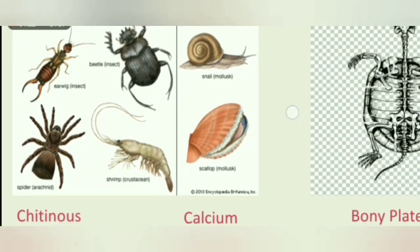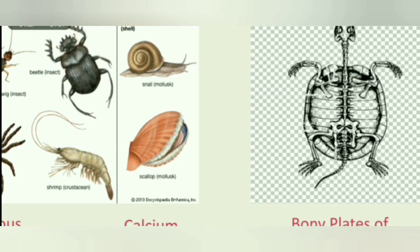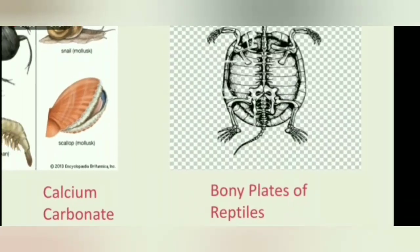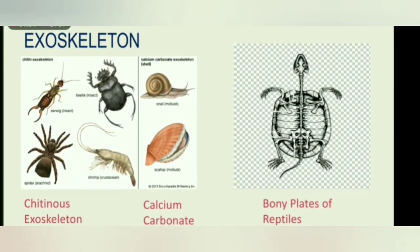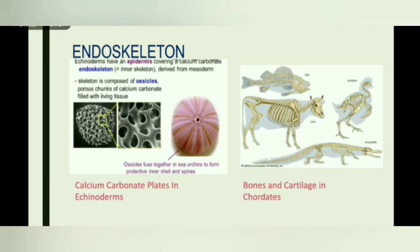Moving on to the calcium carbonate exoskeleton, this can be mainly observed in mollusks. Then we have the bony plates of reptiles. You can observe this in the diagram — this is a turtle. The outer shell acts as the exoskeleton; it is a bony plate.